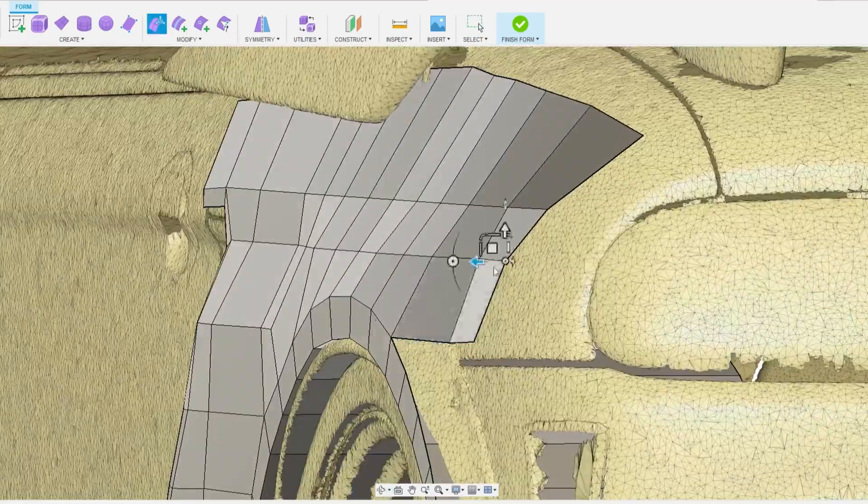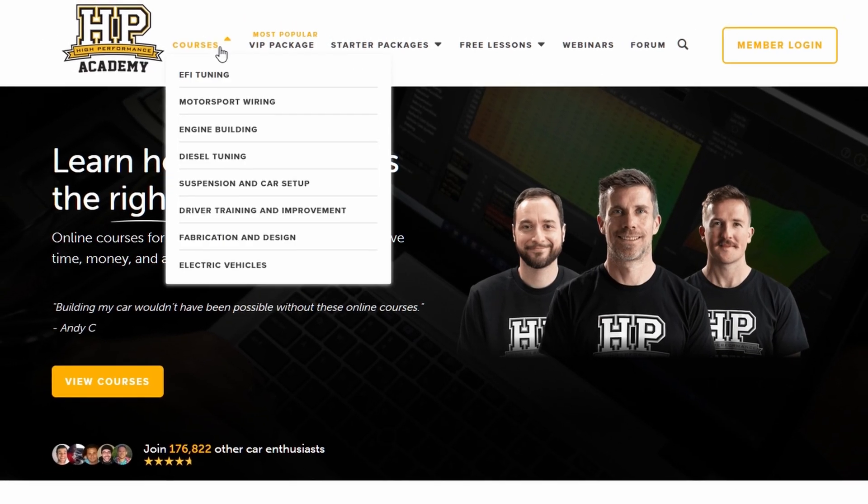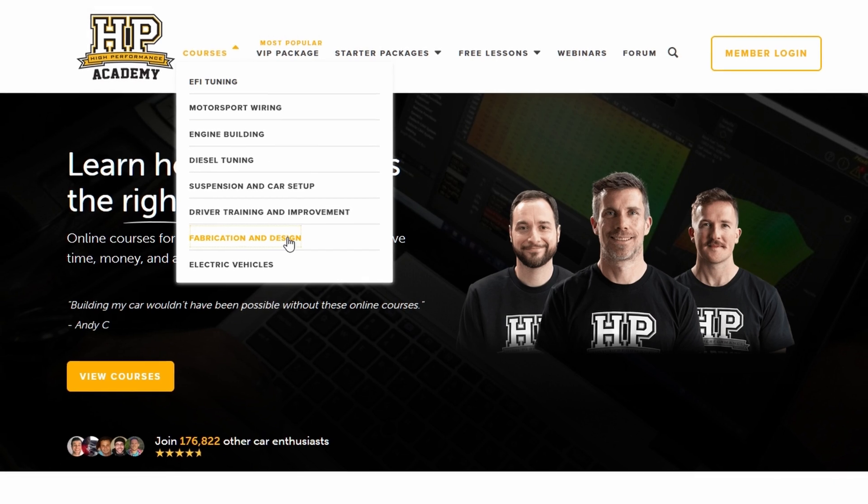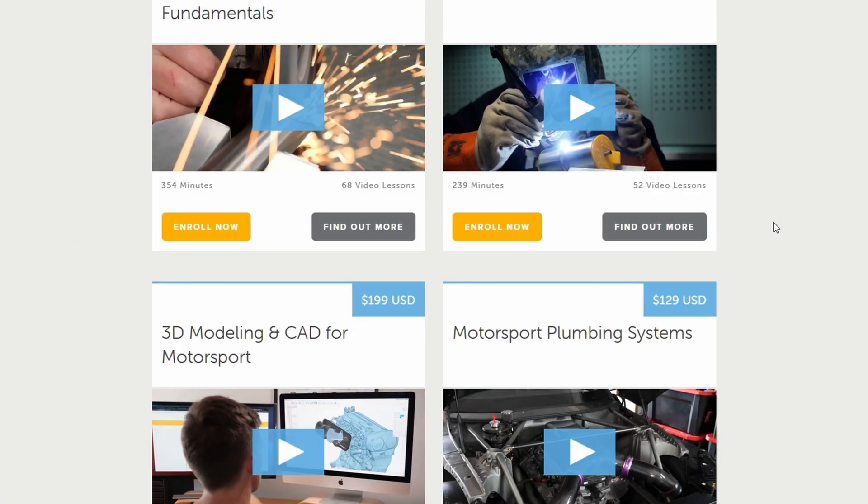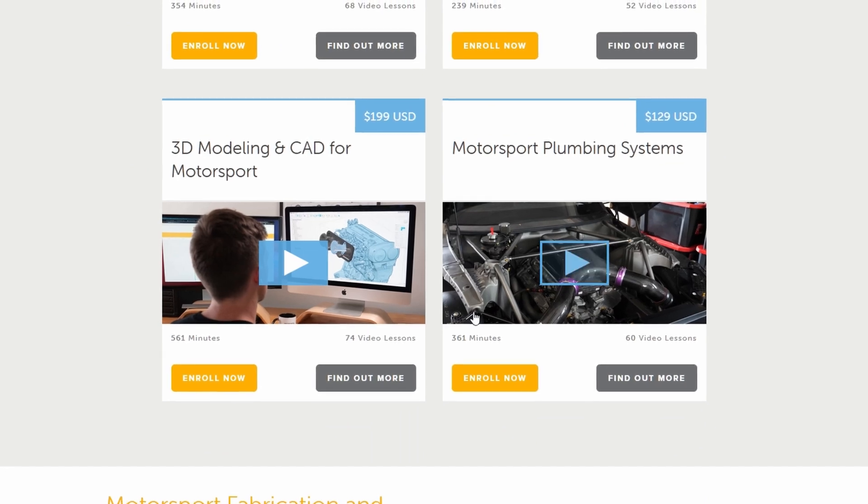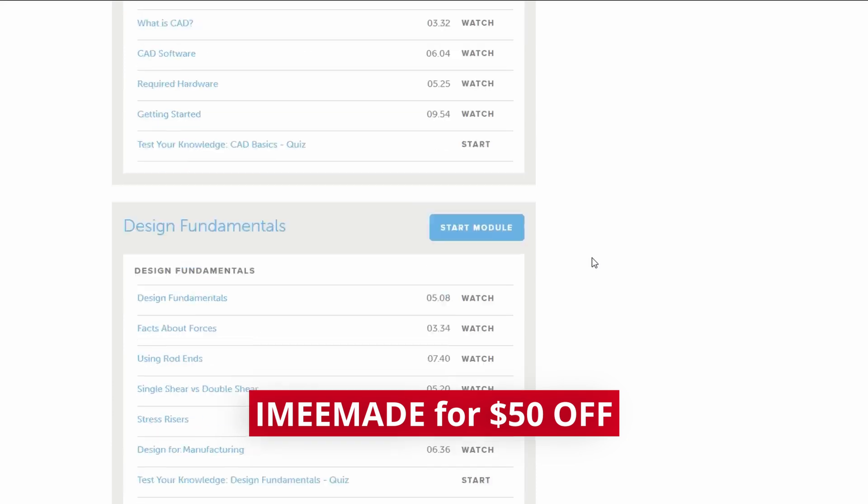If you're just getting started, I want to make things like this. Horsepower Academy has a 3D modeling and CAD for motorsports course that teaches you all the fundamentals and has working examples so you can confidently design parts yourself. And if you use the code EMYMADE, you'll get $50 off and the channel also gets hooked up.